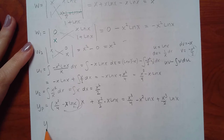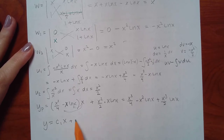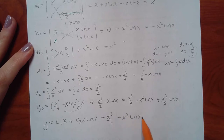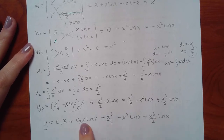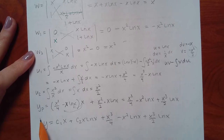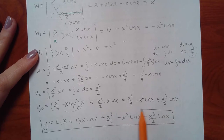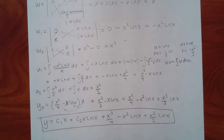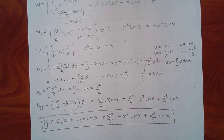Putting everything together: the full general solution is c1·x plus c2·x·ln(x) plus x cubed over 4 minus x squared·ln(x) plus x cubed over 2 times ln(x). None of these are like terms: the complementary part has x in front of ln(x), the particular part has x squared and x cubed in front of ln(x). So this is the final answer and cannot be simplified further.